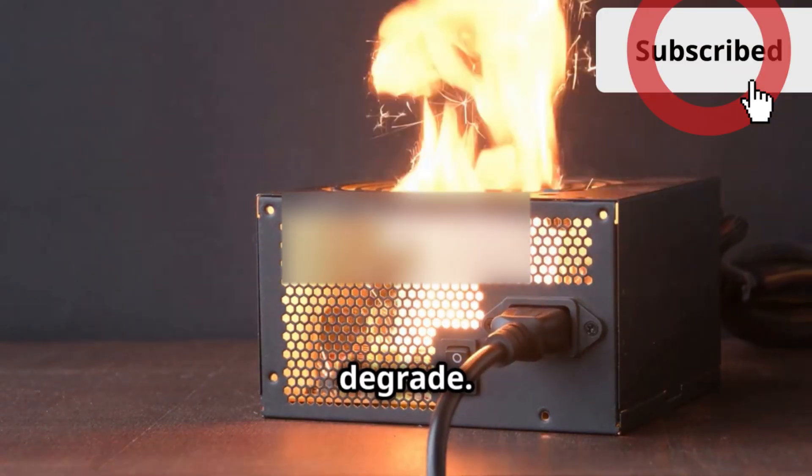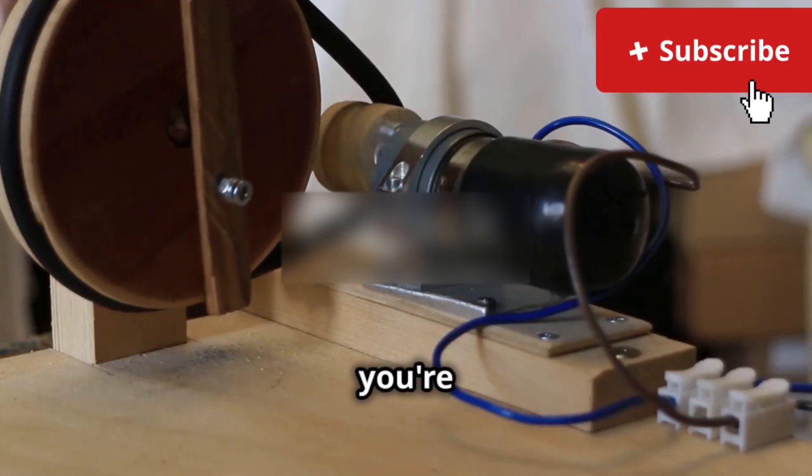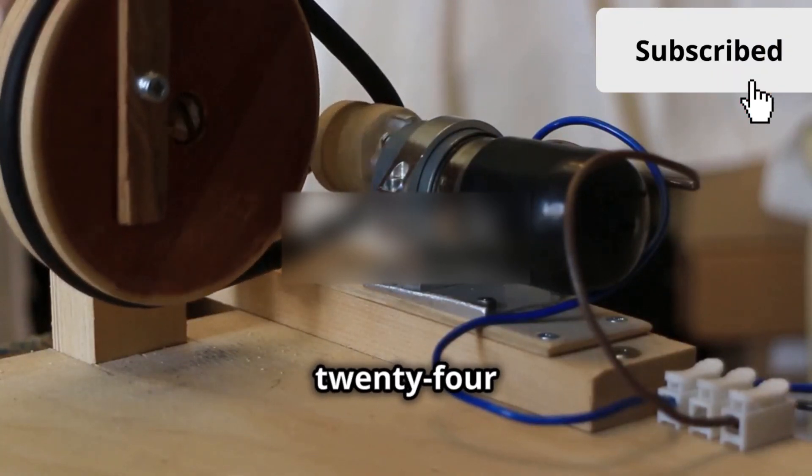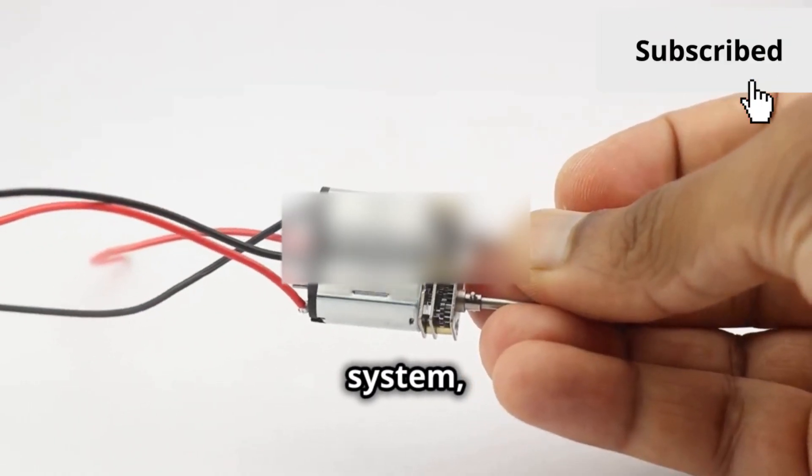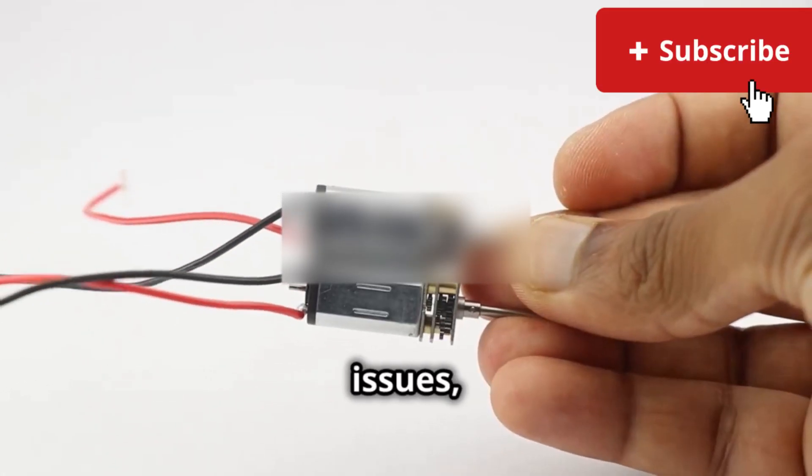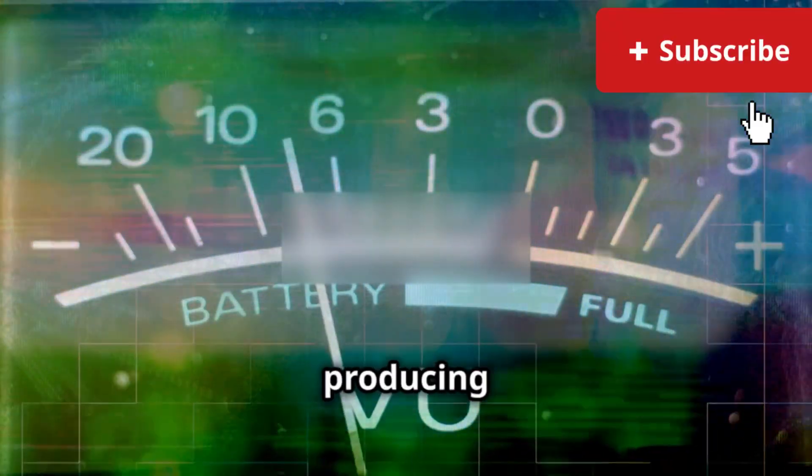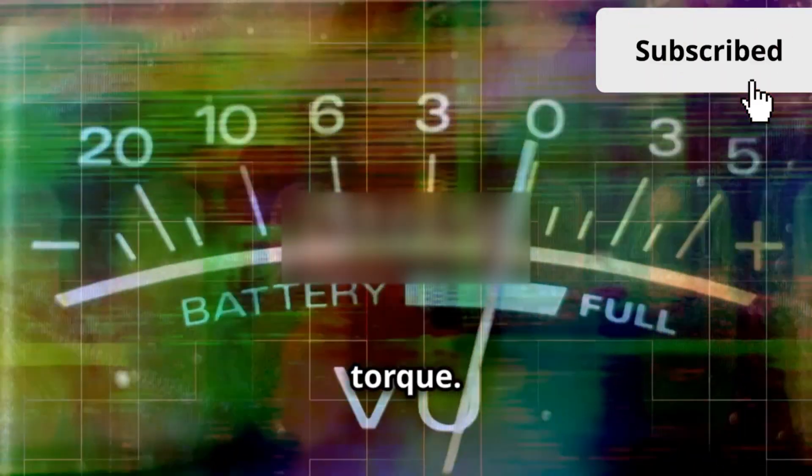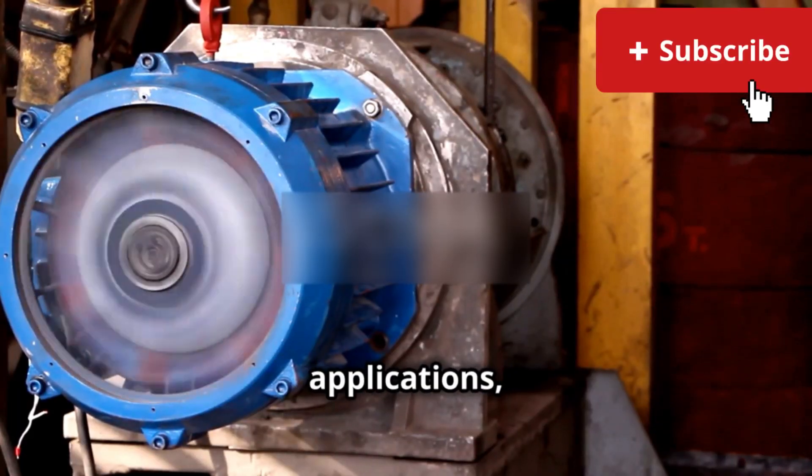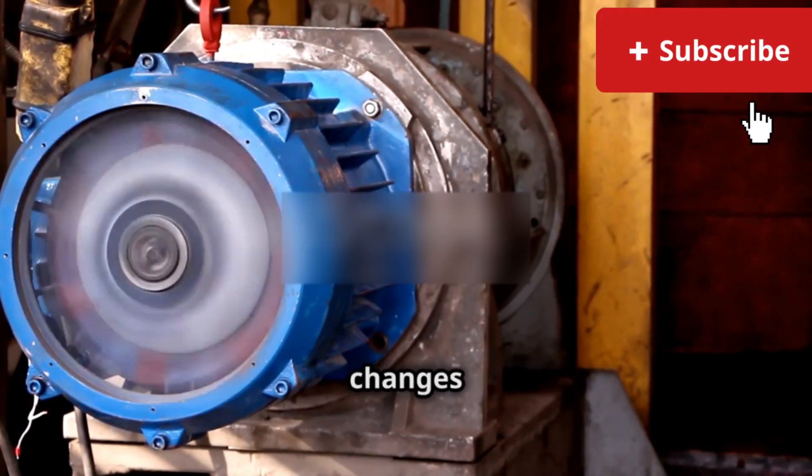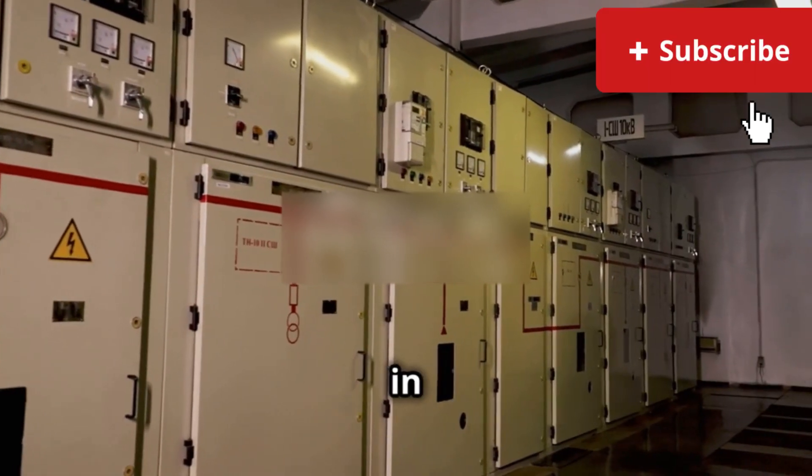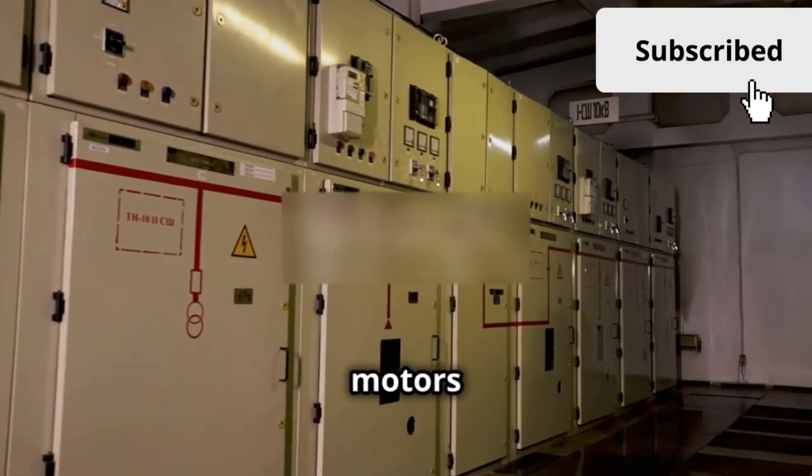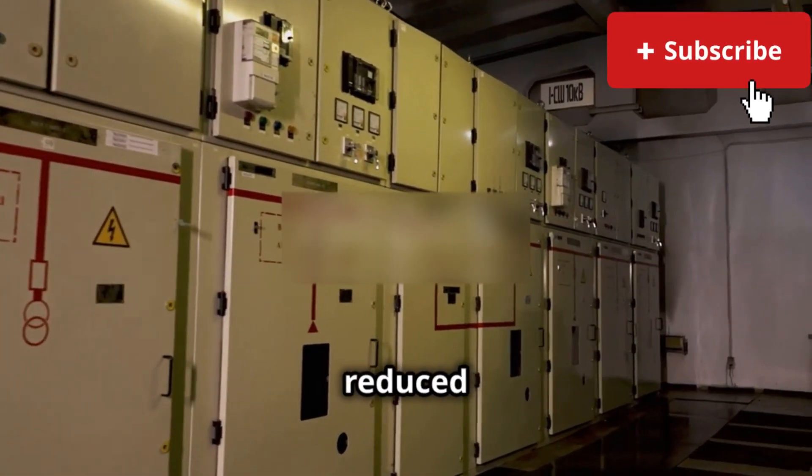In real-world applications, the implications of voltage changes can be severe. For instance, in industrial settings, using motors at the wrong voltage can lead to reduced productivity, increased energy consumption, and even safety hazards. Similarly, in medical devices, using motors at the wrong voltage can lead to device failure, which can have serious consequences for patients.